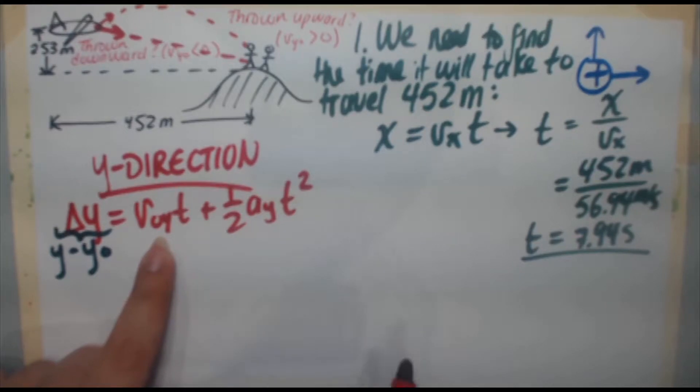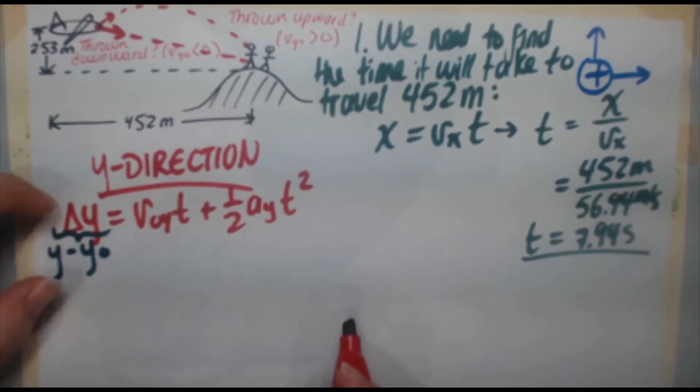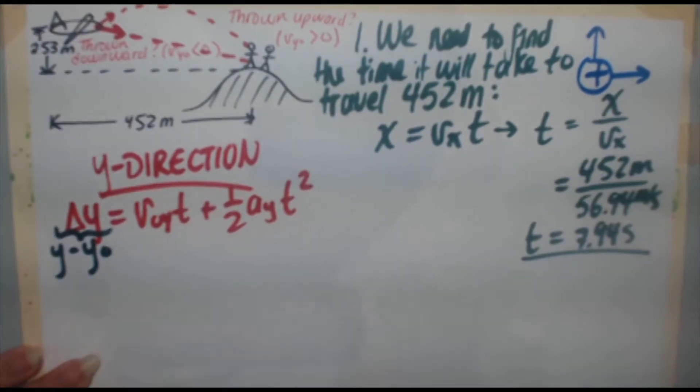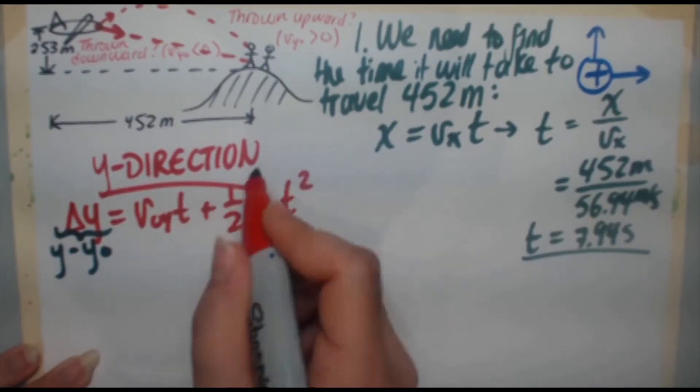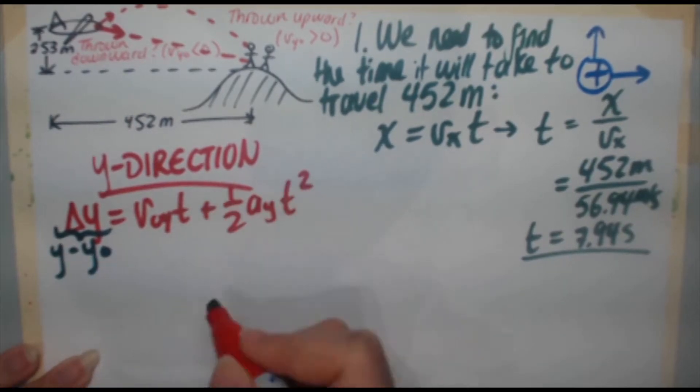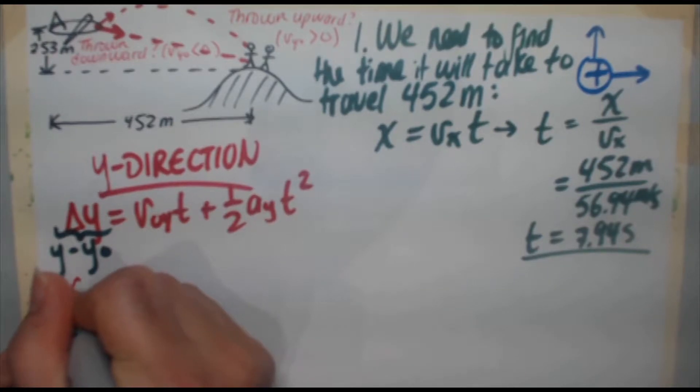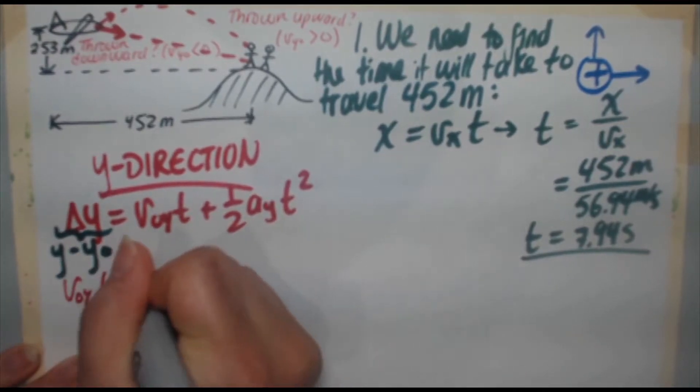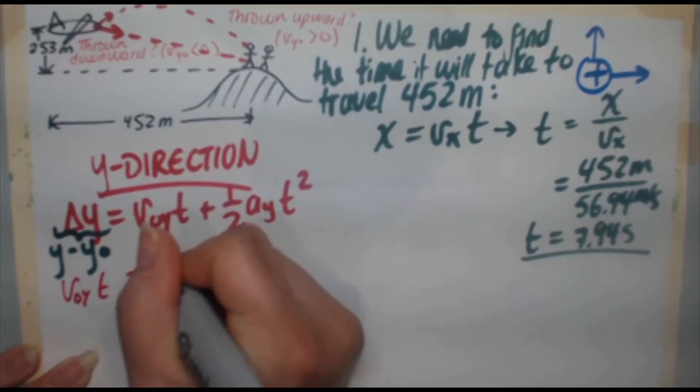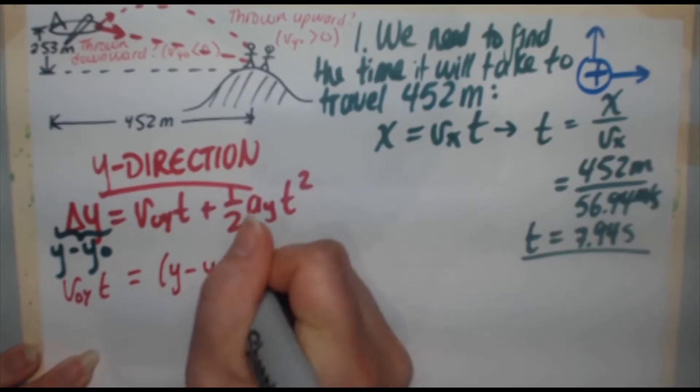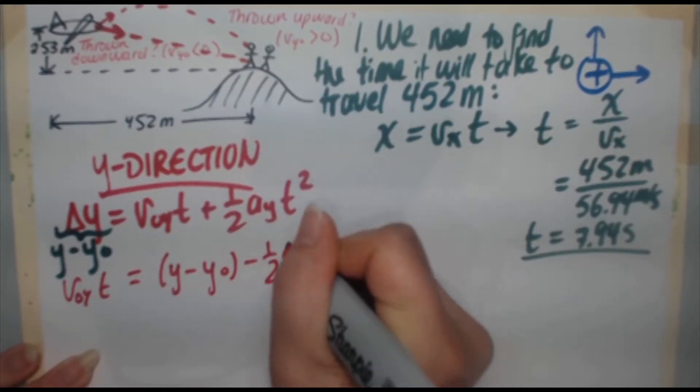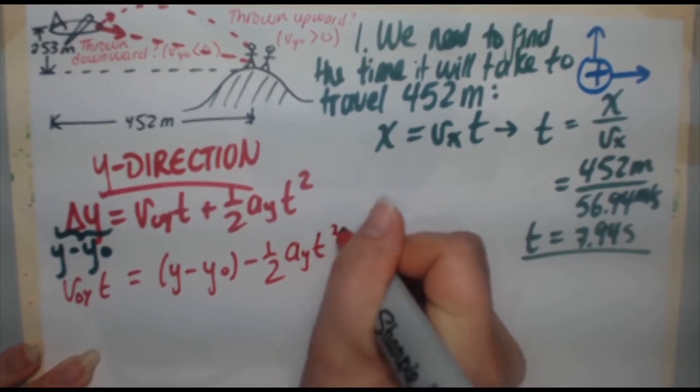Now because we're looking for V not Y, I'm going to bring this to the left side of the equation, bring the delta Y to the right. Actually, instead of doing that, why don't I bring this minus over to the left, this one half A Y T squared, make it a negative. That'll be a little easier. So we'll do that. V not Y T is equal to Y minus Y not minus one half acceleration Y T squared.